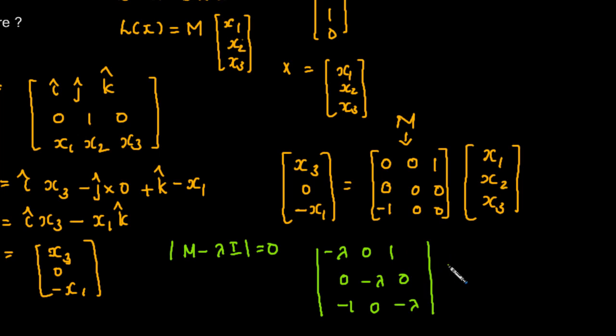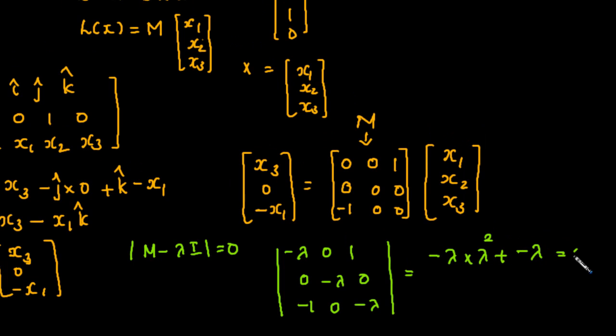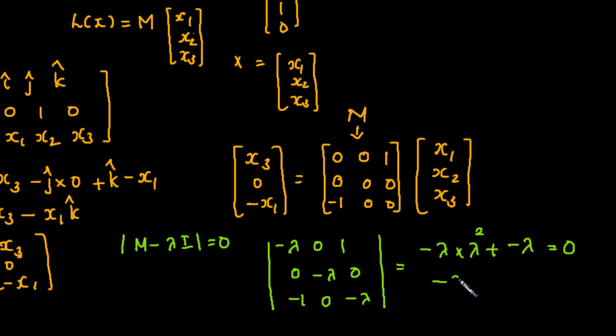We need to calculate this determinant. We will expand along the first row. That will be -λ into λ², and from here it's 0, so the last term is plus 1 into minus 1 times -λ, that is plus λ. There is already a minus sign coming here, so this determinant will be -λ³ - λ.